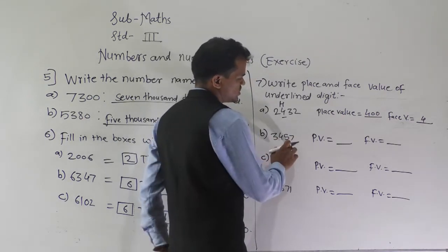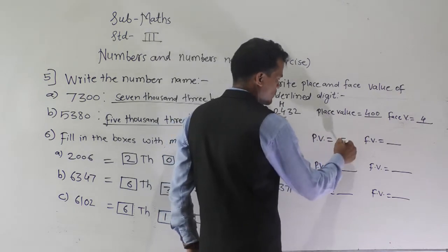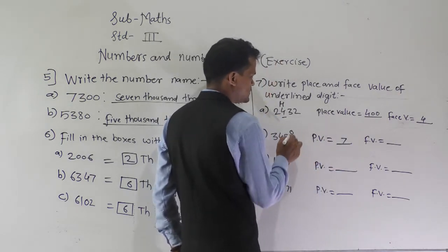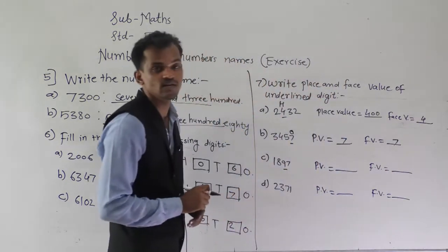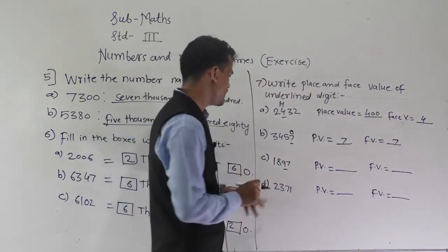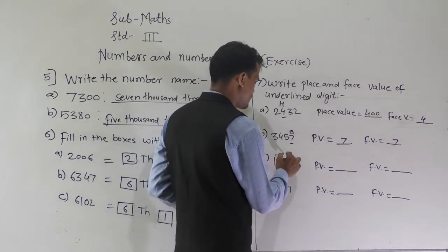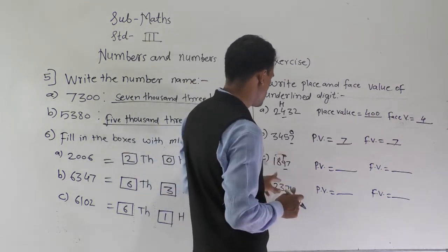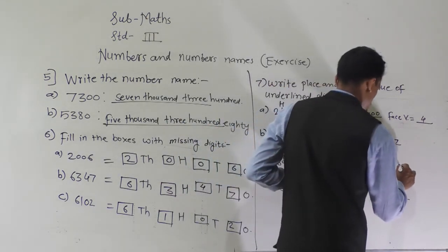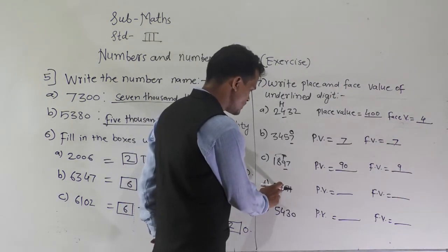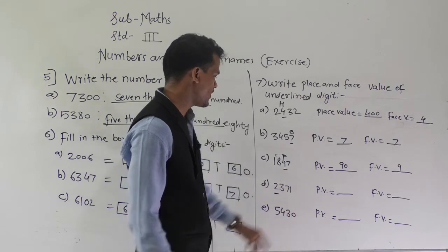Then 3457 — the underlined digit is 7. The place value of 7 is 7 because it comes at the one place, and the face value remains the same, which is 7. Then 1897 — here 9 comes at the ten place, so the place value of 9 is 90, and the face value is 9.